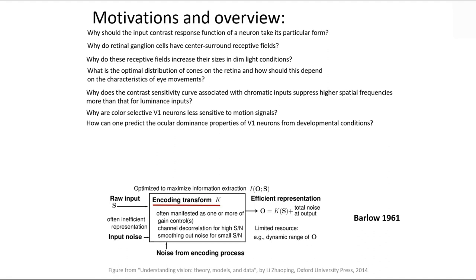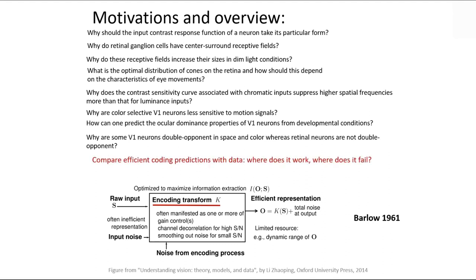Can we predict ocular dominance columns? Some cells in V1 are clustered and selective to the left eye, others to the right. Why are V1 cells double-opponent for color but retinal color cells single-opponent? The idea is we can try to put all this diversity of things into a single unified principle — just like Newton's law, which is very simple but explains the whole universe.